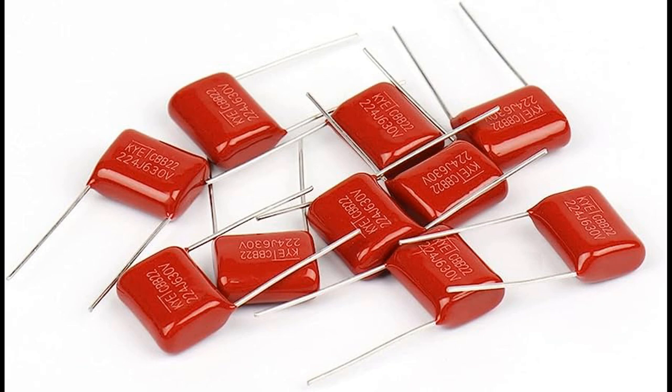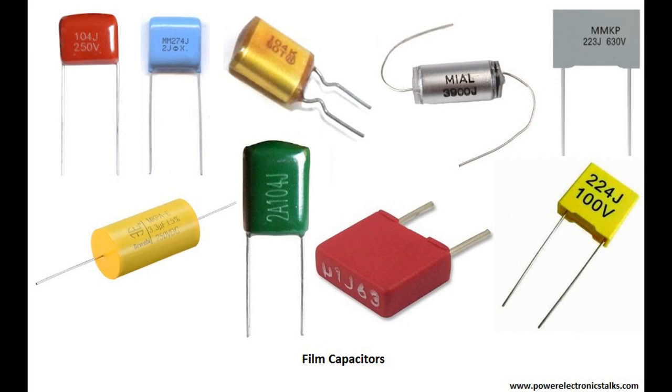Polyethylene terephthalate (PET) film is used as the dielectric material in PET film capacitors. PET capacitors provide good electrical properties, stability, and are suitable for general-purpose applications. Polyphenylene sulfide (PPS) film is used in PPS film capacitors, which offer excellent temperature stability and high reliability.